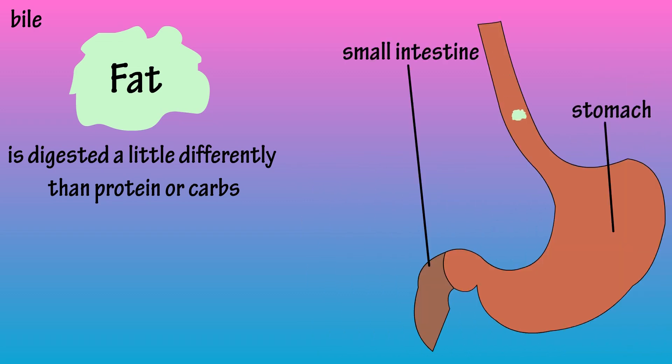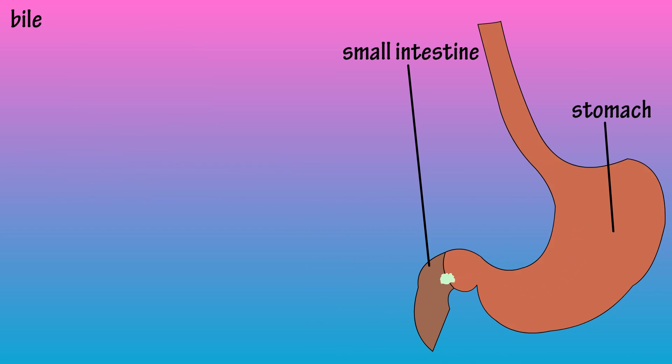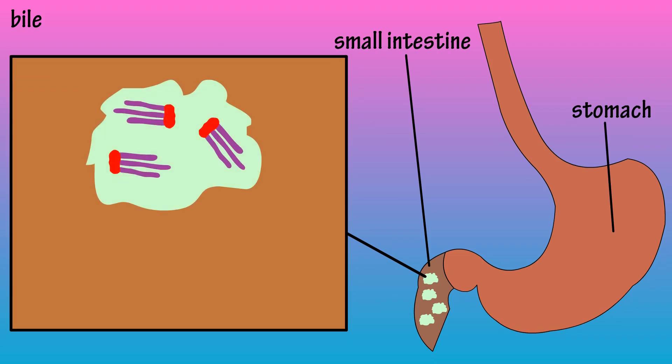As fat moves through the digestive system, it mainly remains clumped together. When fat reaches the small intestine, it basically is large fat droplets, and this is where bile does its job.